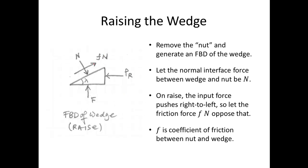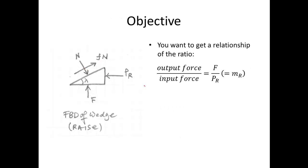Let's take away the nut and replace it with a normal force N acting against the screw or wedge, and then a resisting frictional force, with lowercase f being the coefficient of friction between the nut and the wedge, and capital N being the normal force acting between them. Our objective is to get a relationship between the output force — the nut force F — divided by the input pushing or raising force P_r. That ratio gives us the actual mechanical advantage.